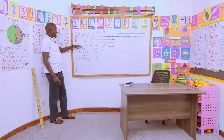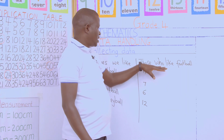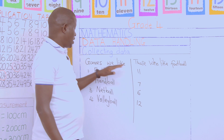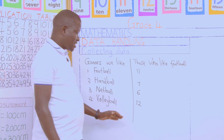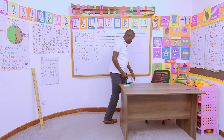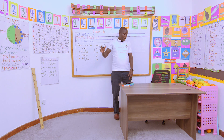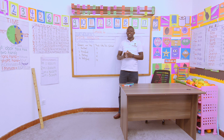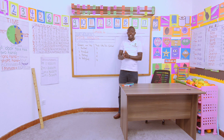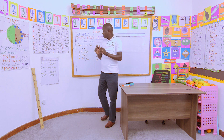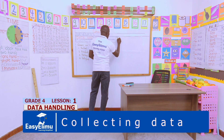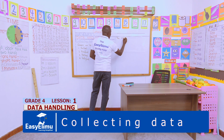Remember, this is the game we like and this is the number of those who like this game. We have analyzed the game and those who like that game. Now, the information that we have just collected — we call it data. The information collected is called data.